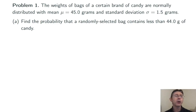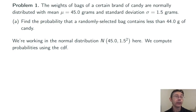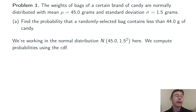So part A is just a normal distribution question — it's only one bag taken from a normal distribution. We're looking at the normal distribution with mean 45 and variance 1.5 squared, and so we're going to do the calculation just using a normal CDF.